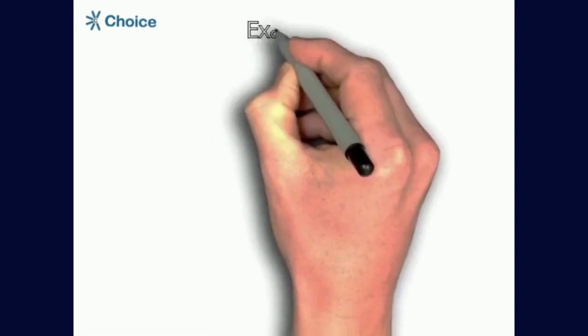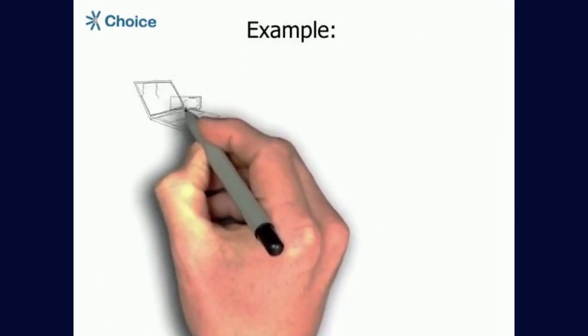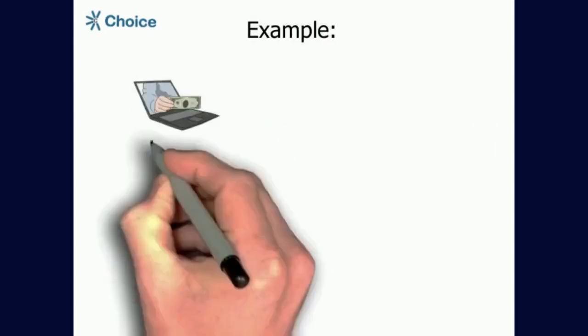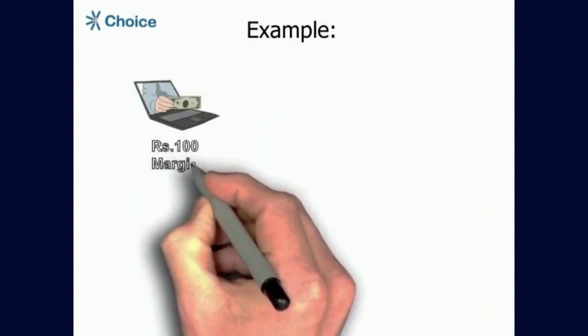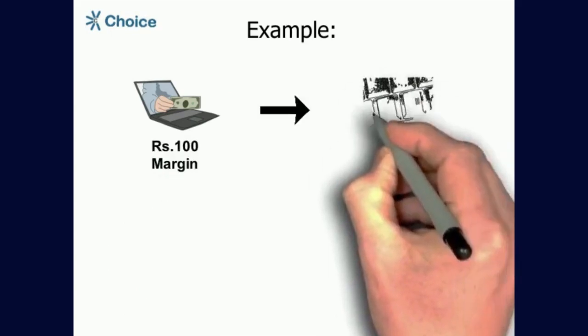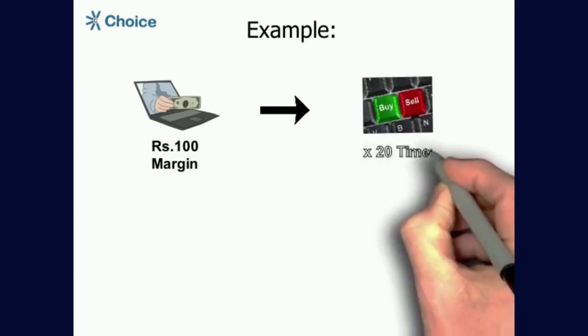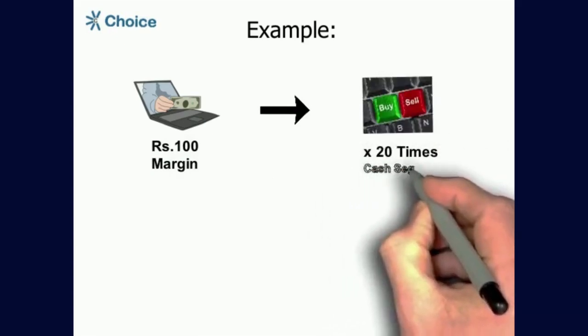Let's take an example for more clarity. If you have a margin of Rs.100 in the form of ledger credits or shares pledged or mix of both, then you can trade intraday maximum up to 20 times of trade value in cash segment at any given amount of time.